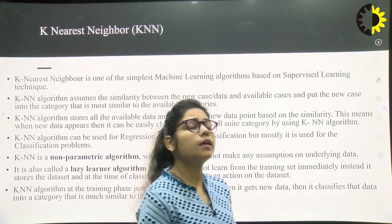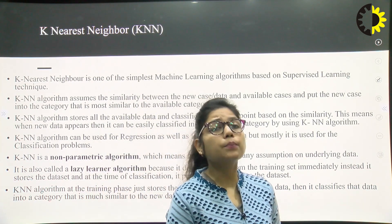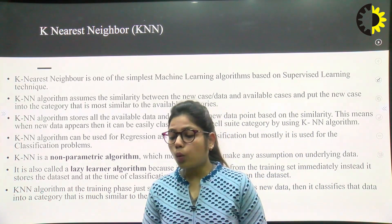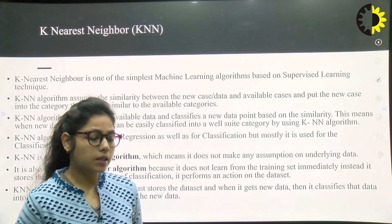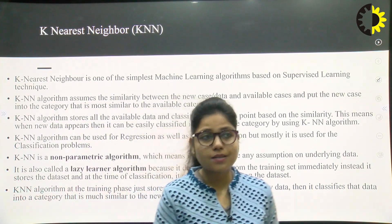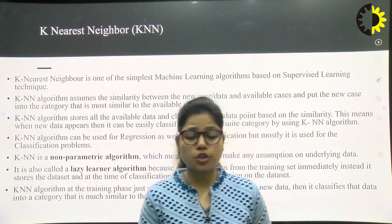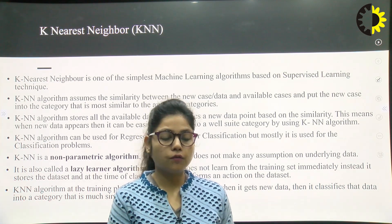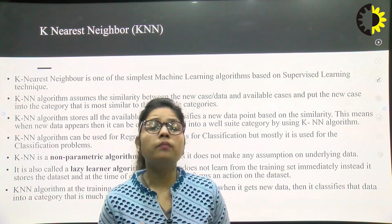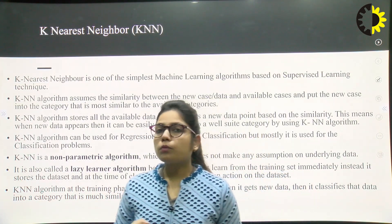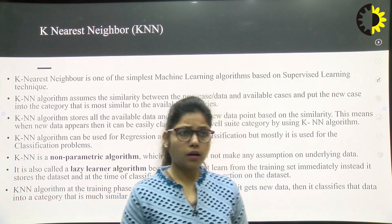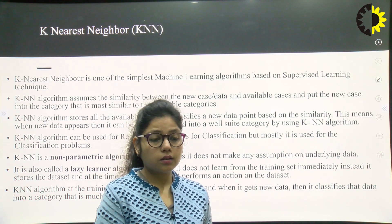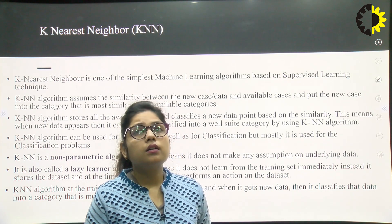What is K-nearest neighbor? KNN is one of the simplest machine learning algorithms based on supervised learning technique. Supervised learning is a part of machine learning — it is a type of machine learning in which we have inputs and outputs, and we need to map the correct input to the correct output. Supervised learning is not suitable for real-time data, and in supervised learning, different types of classification and regression are done.